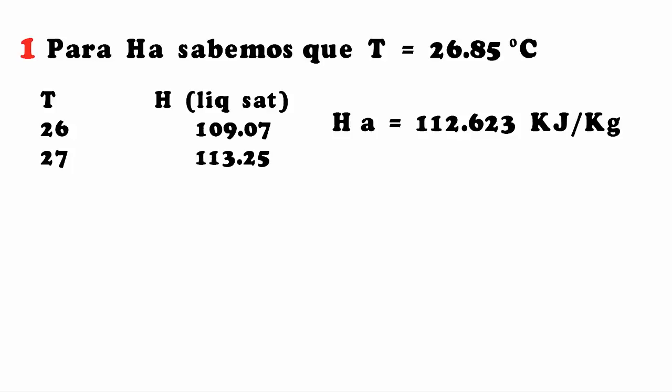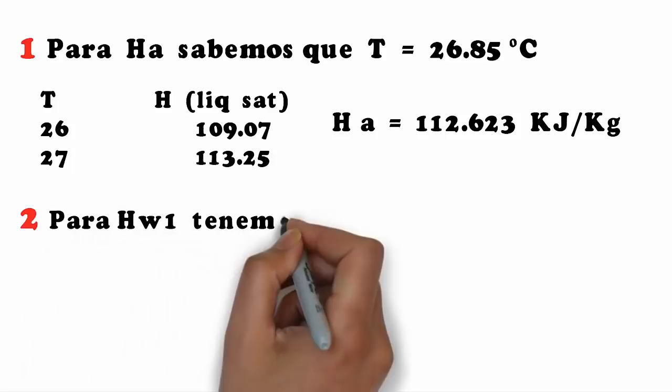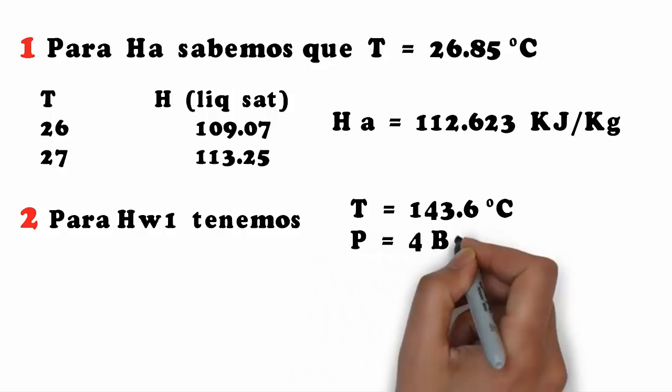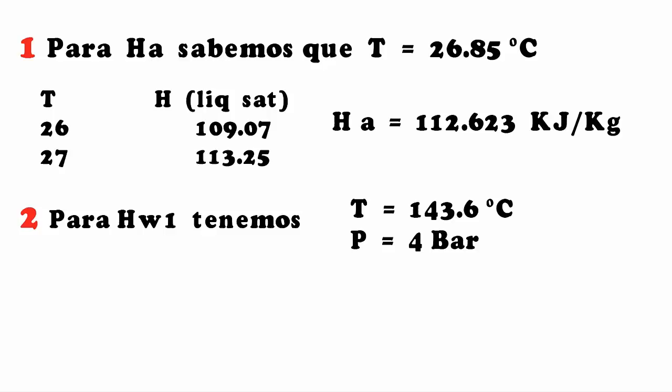To calculate HW1, the evaporator is fed at a pressure of 4 bar. We consult the pressure tables and find that 4 bar corresponds to a saturation temperature of 143.6°C. Using this same pressure, the saturated vapor enthalpy is HW1 = 2738.6 kJ/kg.